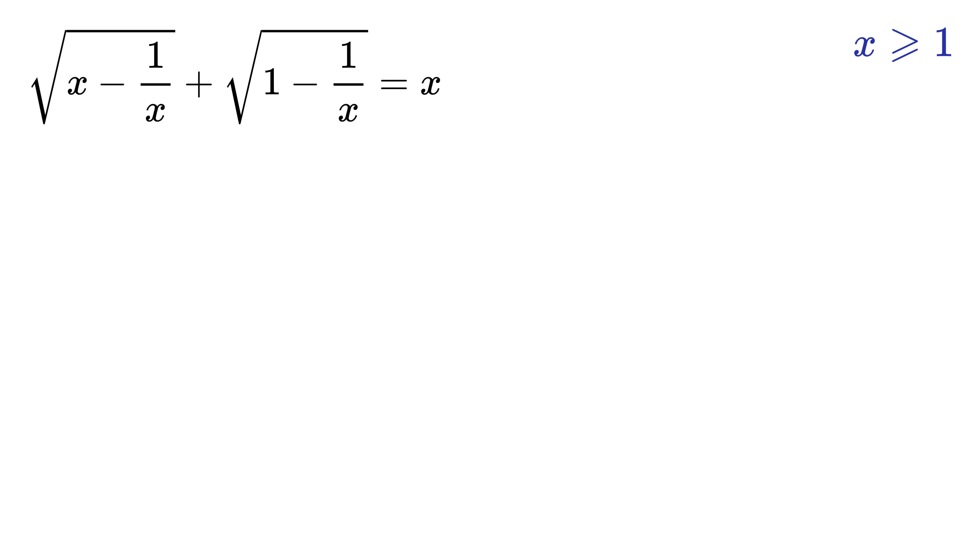Now, let us solve this problem geometrically. Let us call this thing as p. Now, just square on both sides to get p square as x minus 1 over x. Take this here, and thus we get x equals p square plus 1 over x. We can also rewrite this x as square root of x whole square, and this one over x as 1 over square root of x whole square, right?